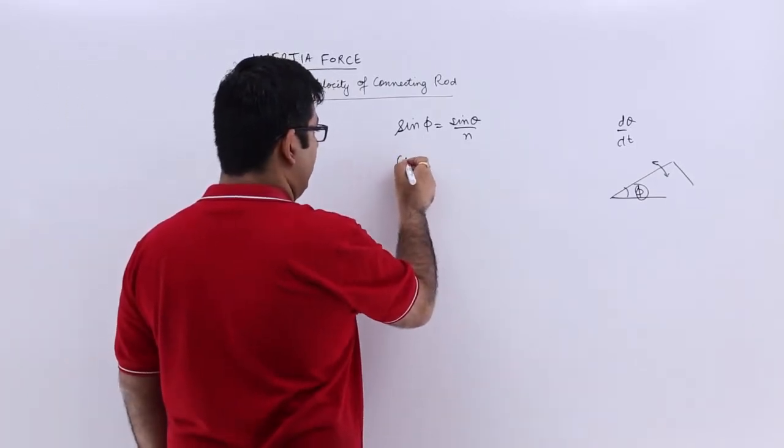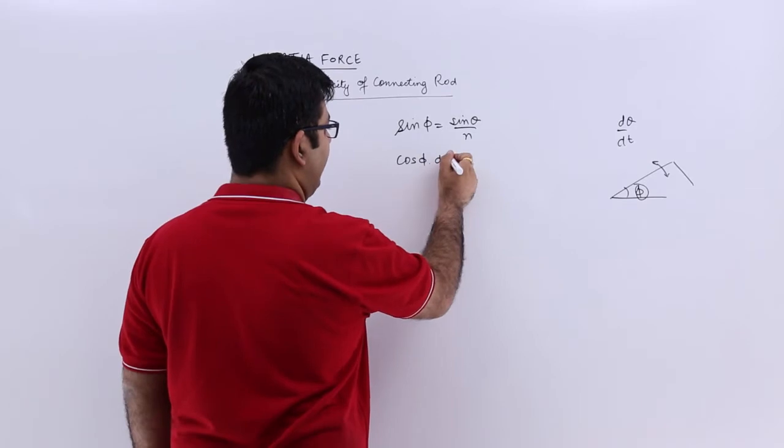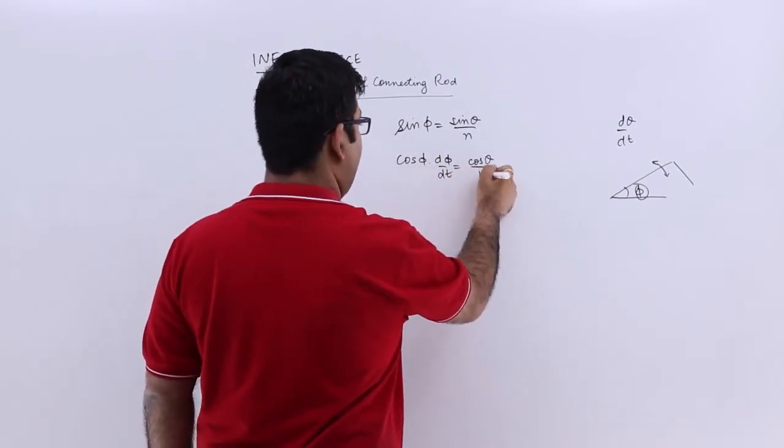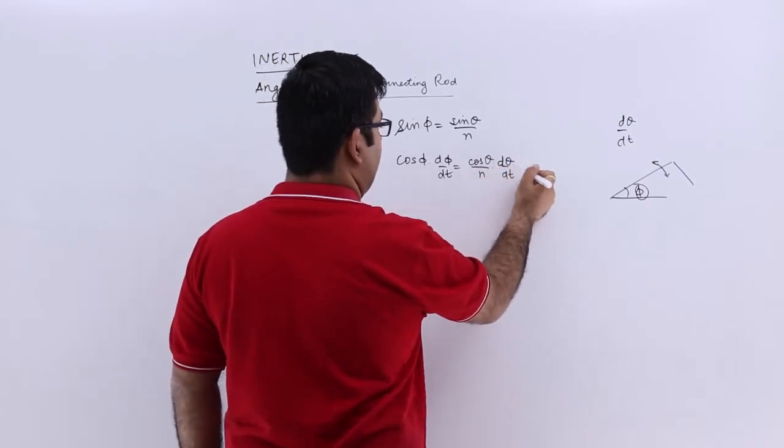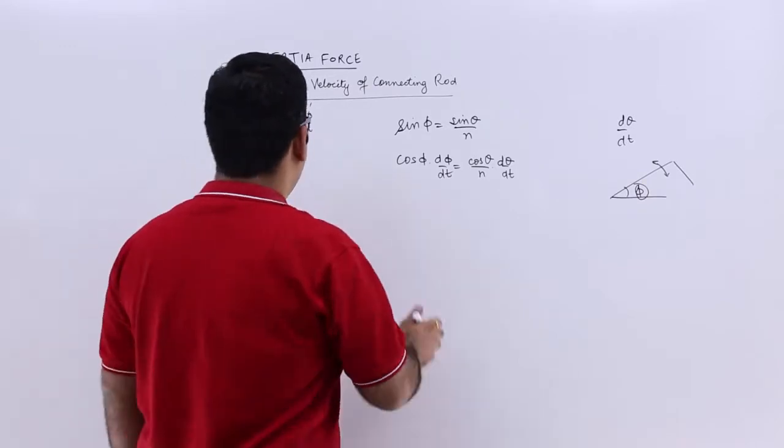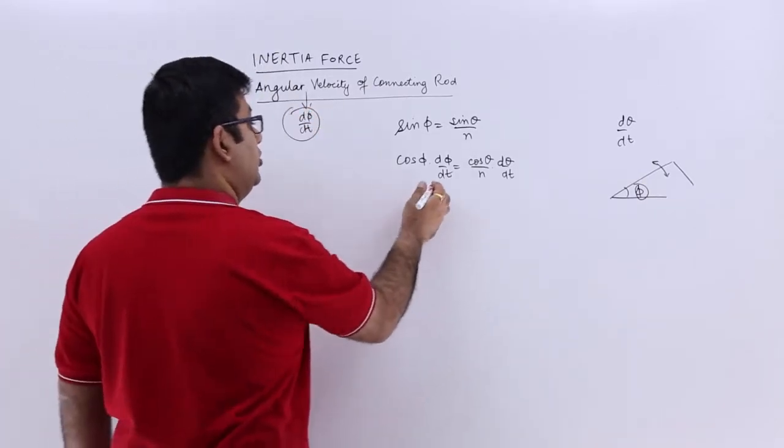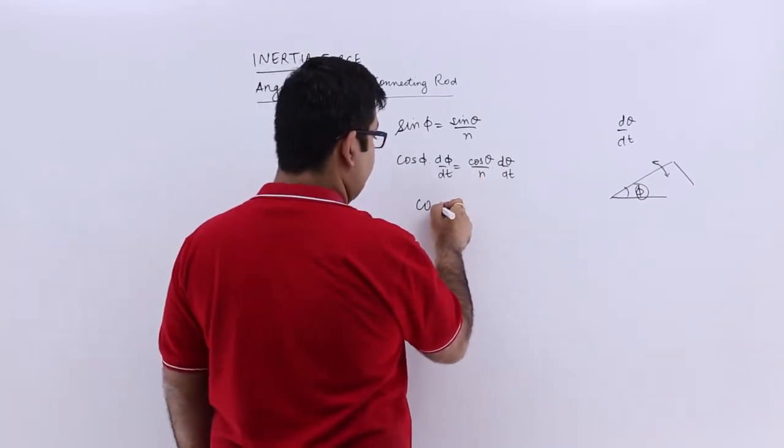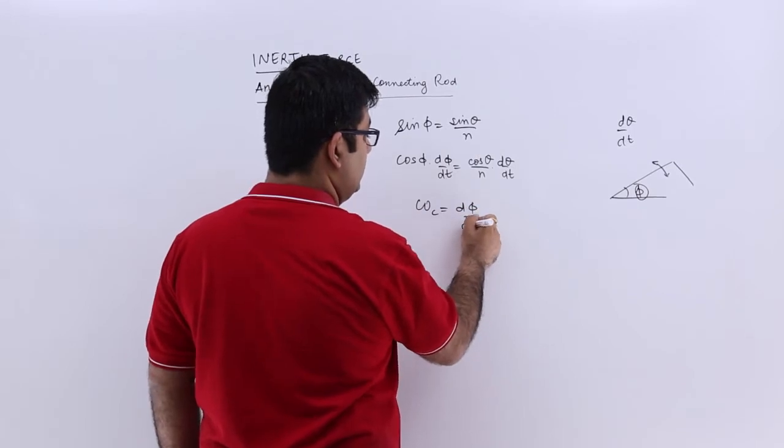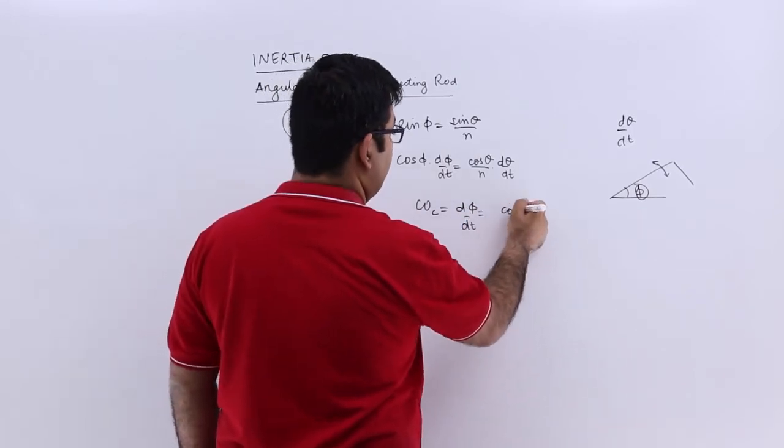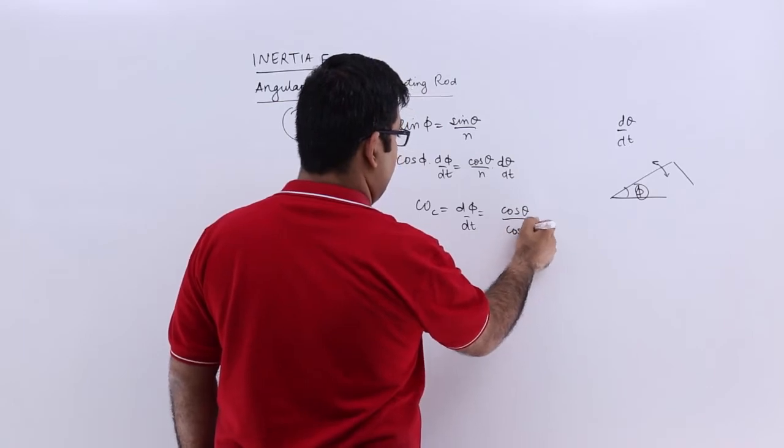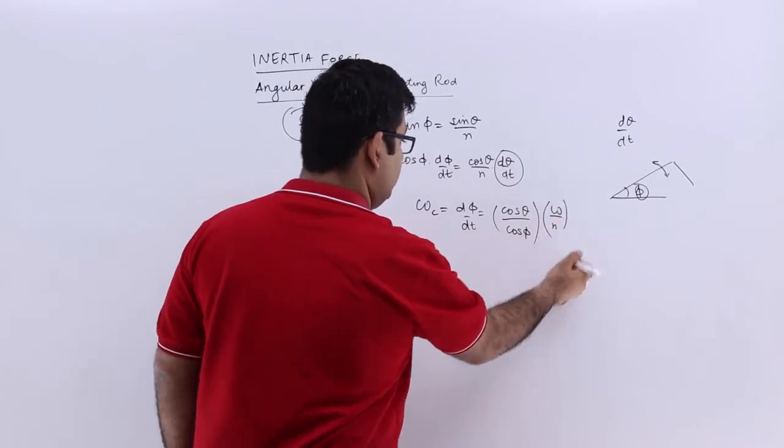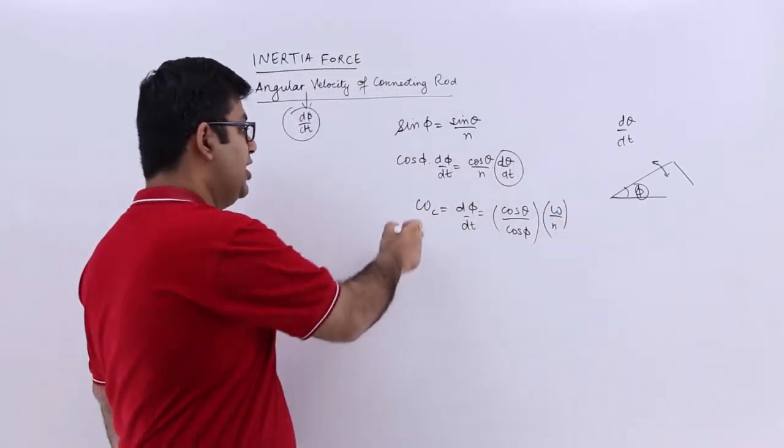So differentiate this, you will get cos phi into d phi by dt equals cos theta upon n into d theta by dt. I need to calculate this part, so omega c equals d phi by dt, which is further equal to cos theta upon cos phi into omega upon n. This is practically your formula.